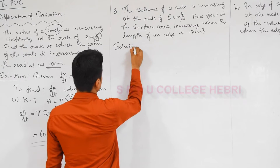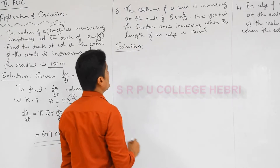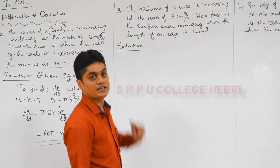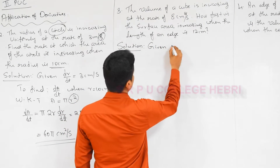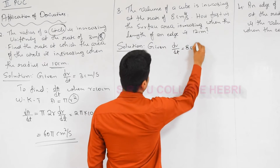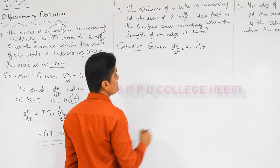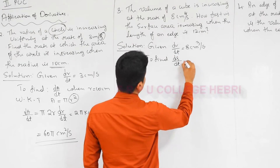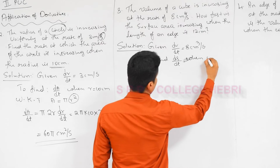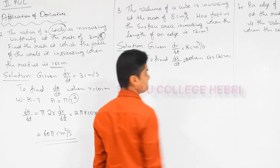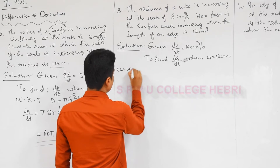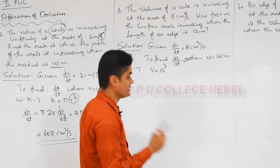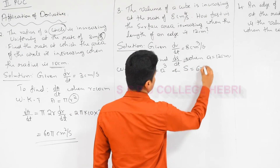Third problem: the volume of a cube is increasing at the rate of 8 cm³/s. How fast is the surface area increasing when the length of an edge is 12 cm? Given: dV/dt = 8 cm³/s. To find: dS/dt when edge a = 12 cm. We know volume V = a³ and surface area S = 6a². From V = a³, differentiating: dV/dt = 3a² · (da/dt). Substituting: 8 = 3(12²)(da/dt), so we can find da/dt.